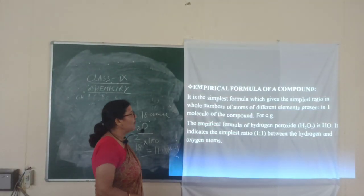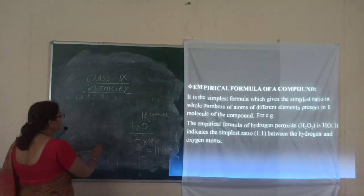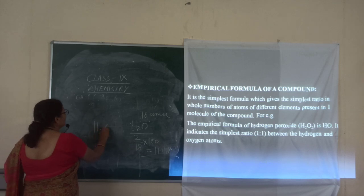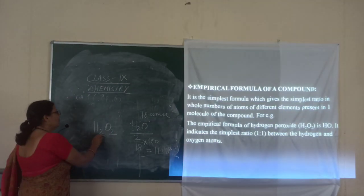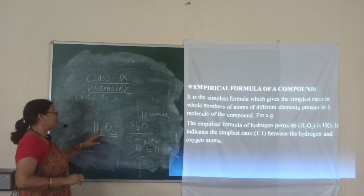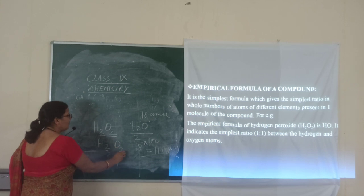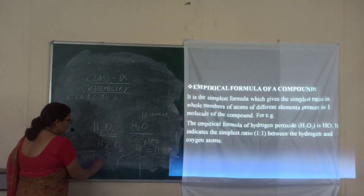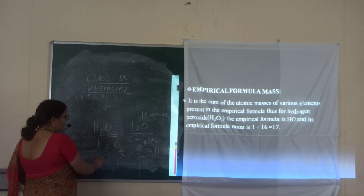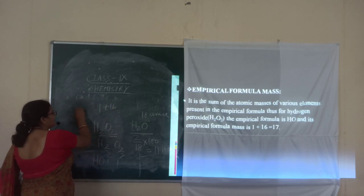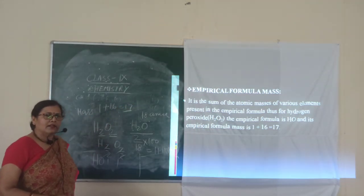Next one is your empirical formula — this is the new term that you are adding in class 9. Suppose it is H2O2, that means hydrogen peroxide. H2O2 — this 2 is the greatest common factor (HCF), so you have to divide: H2÷2 and O2÷2. That means the empirical formula is HO. And the empirical mass — H is 1 and oxygen is 16, so empirical mass is 17.